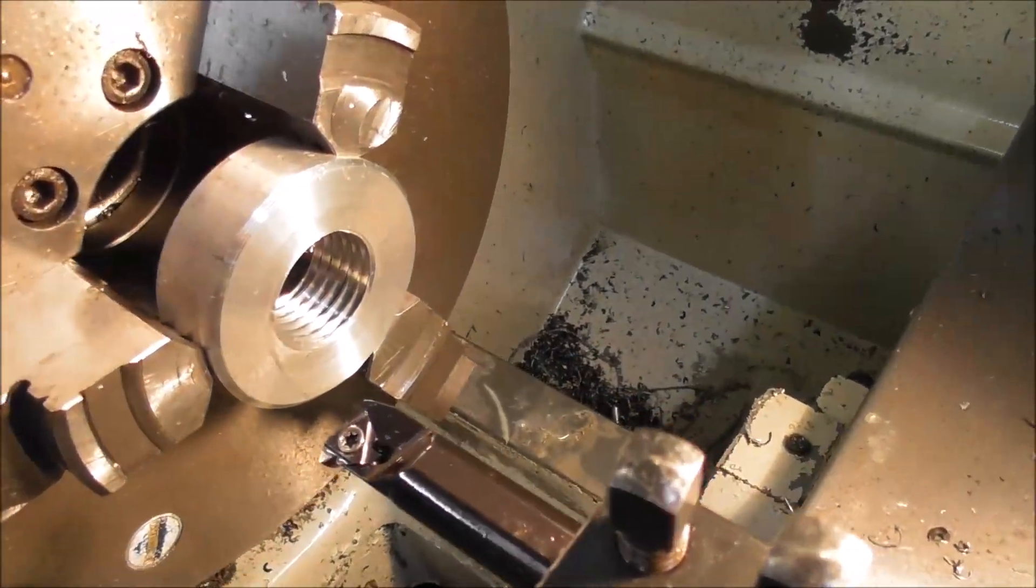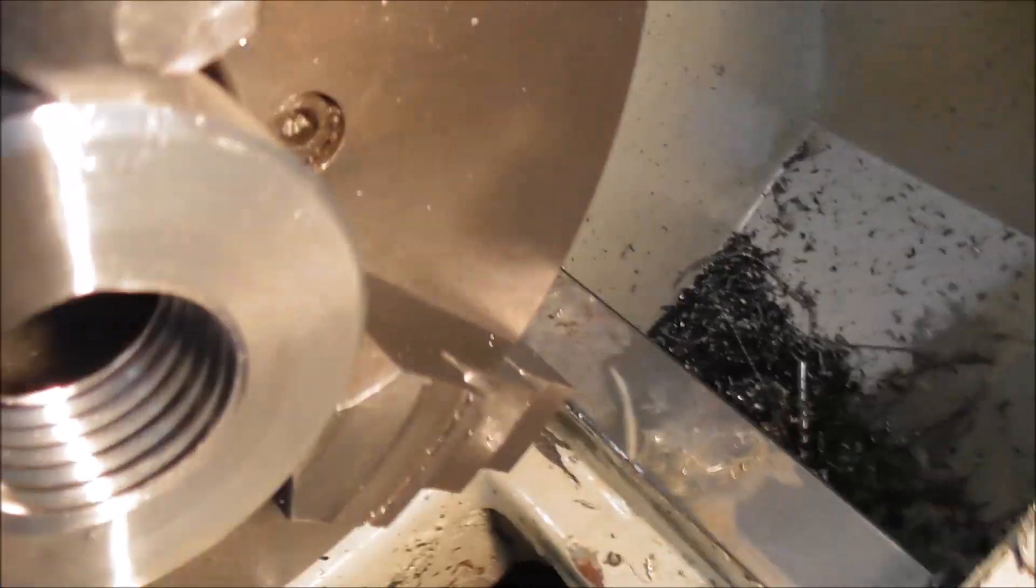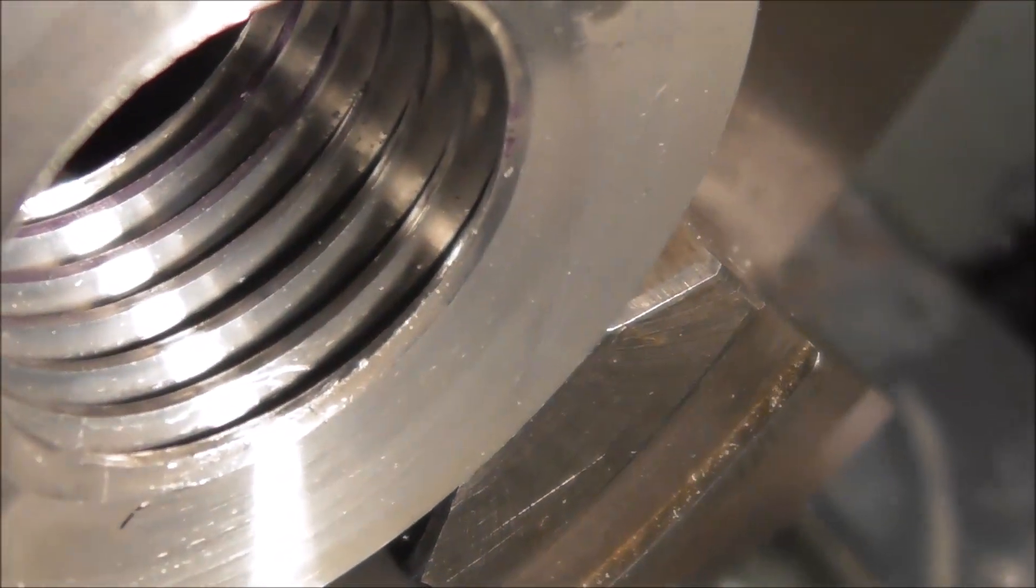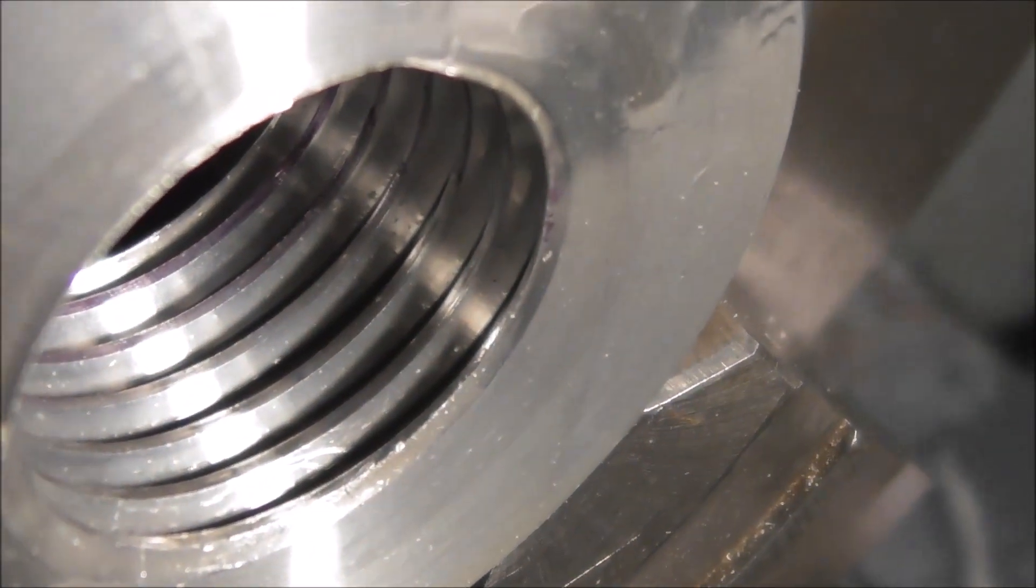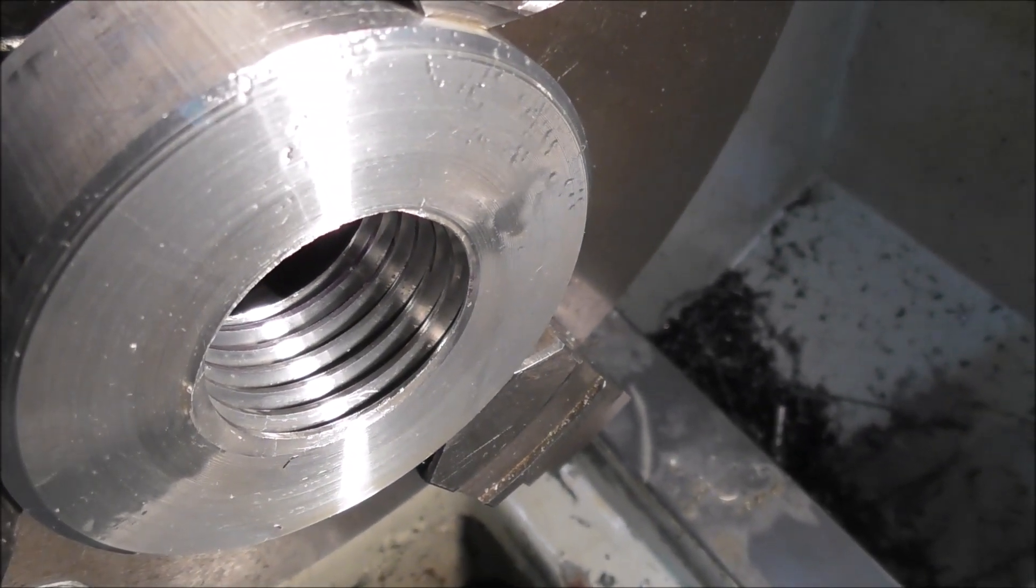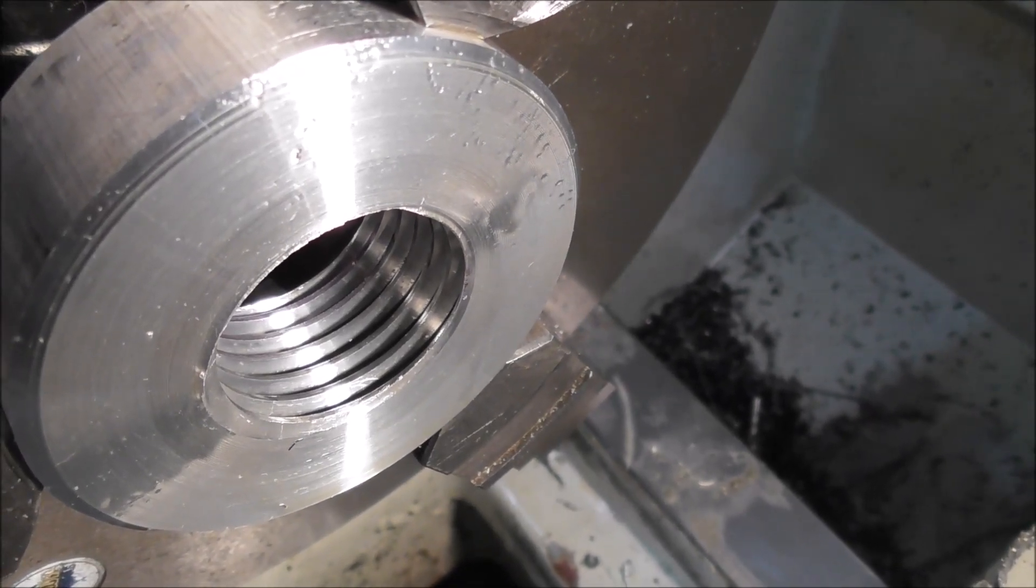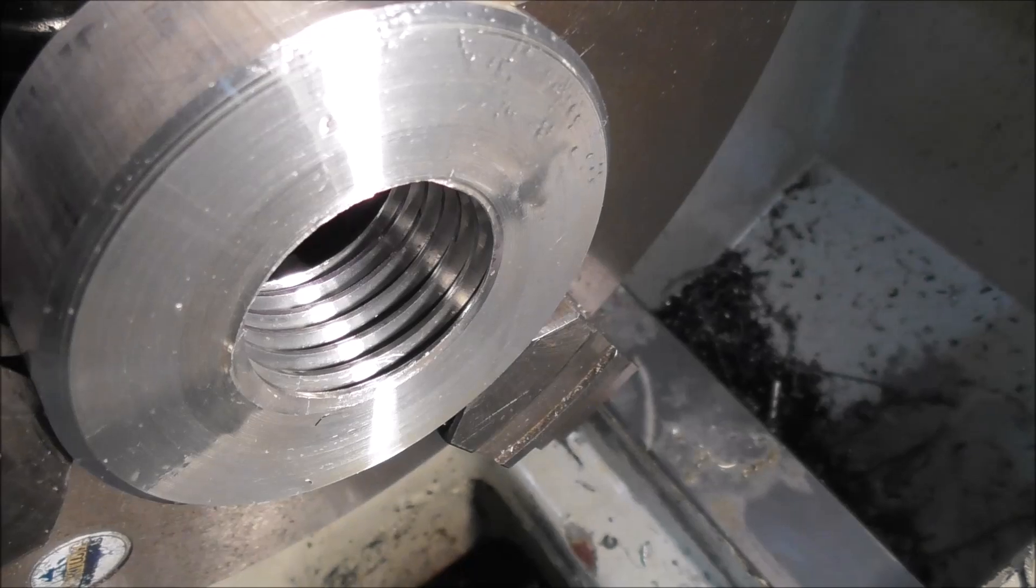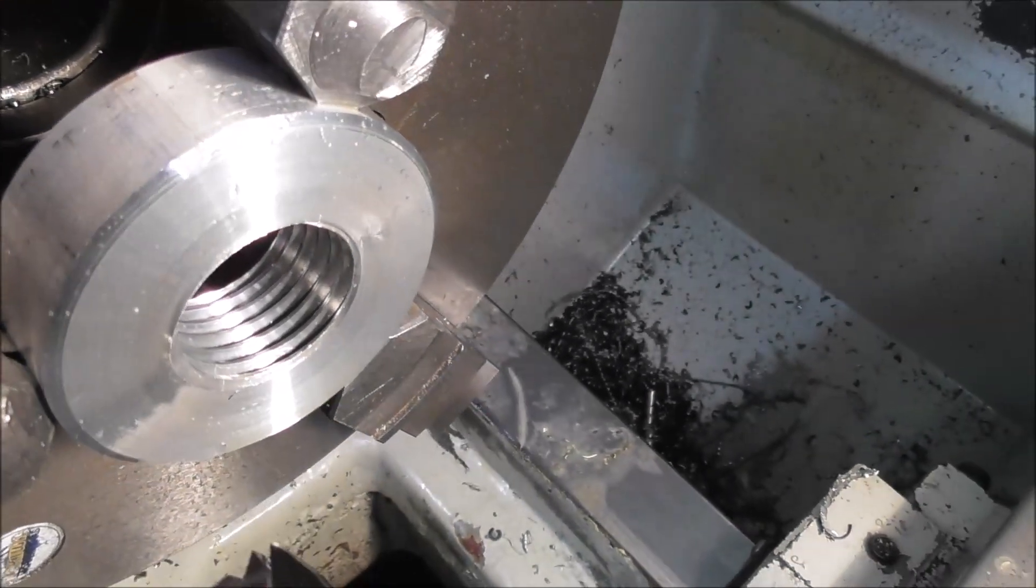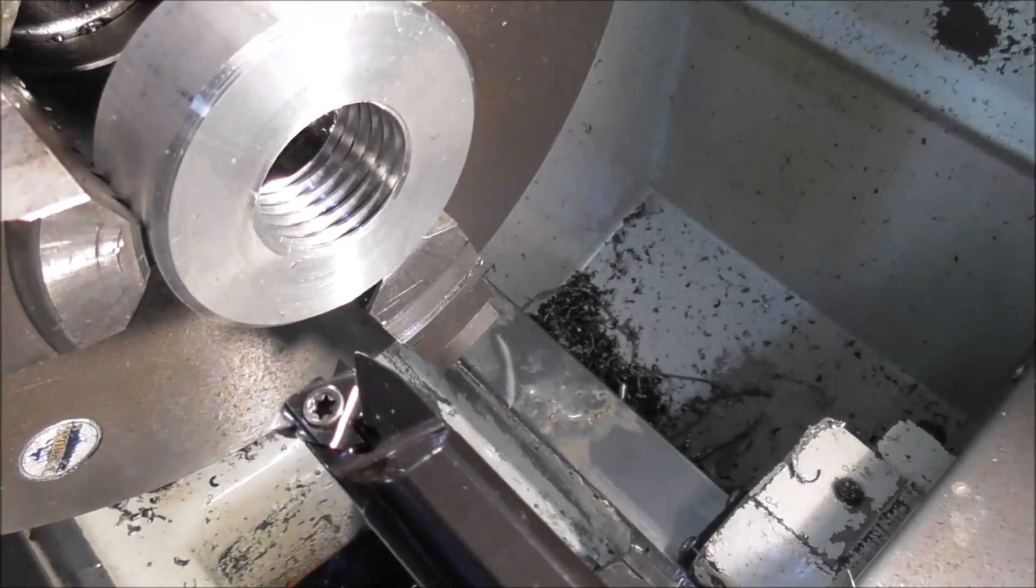Now I need to machine a chamfer on the leading and trailing edges. So you can see there, let's see if we can have a look down in there. There's a thread form. Well this is just aluminium, so it's pretty easy to machine. Usually you'll be using high tensile steel or stainless steel, and so it becomes quite a bit more difficult. You need a really rigid tool and everything's set exactly right. But for a gauge that's only used occasionally, aluminium is fine in this situation.